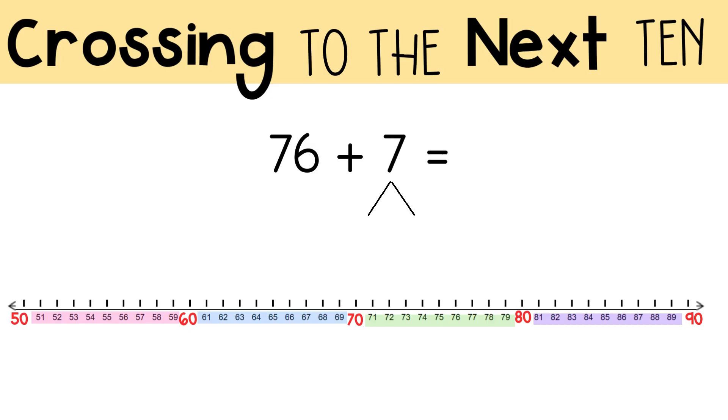You did have to cross a ten to solve this problem. You should have started at 76 and made 4 jumps to get to the next 10, which is 80. Then you should have put that 4 in the number bond.